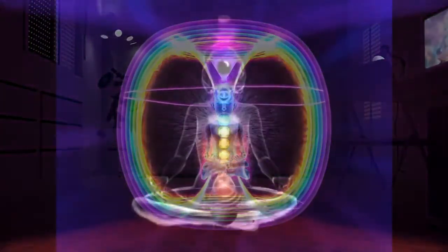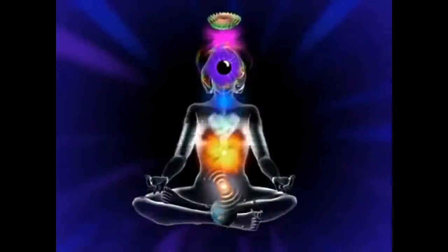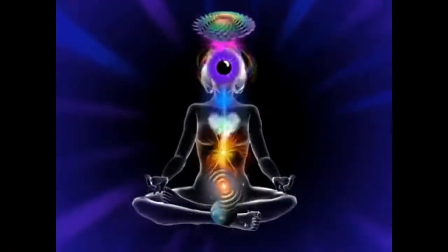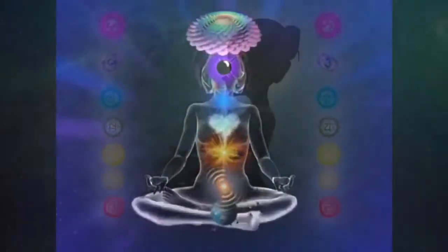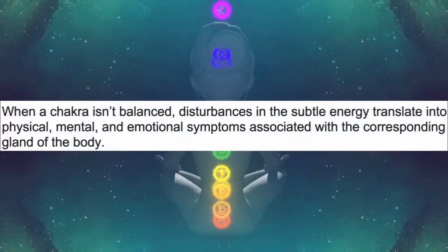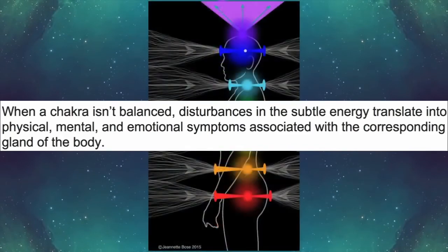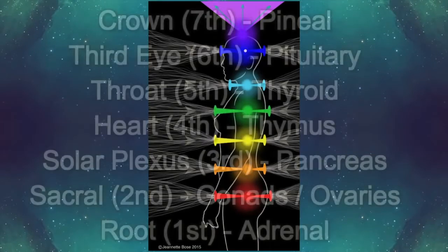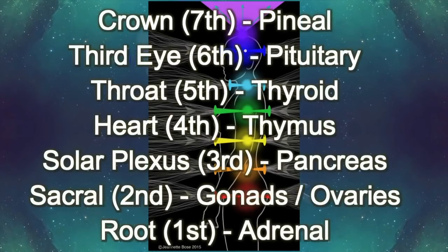We have these seven major energy centers that are always reflecting to us what deficiencies our being is interlaced in. When a chakra isn't balanced, we're told, disturbances in the subtle energy of the chakras translate into physical, mental, and emotional manifestation symptoms.